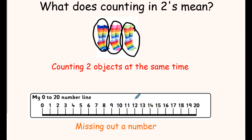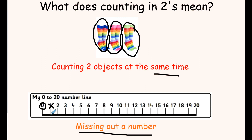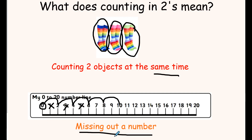Let's have a look at it now on the number line. When we're counting on the number line, we need to make sure that we miss one number out. So if we start at zero, we miss out number one and go straight to two. Then miss out three, go to four, miss out five, go to six, miss out seven, then go to eight and then to ten. So we're basically counting in twos, missing out one number each time.